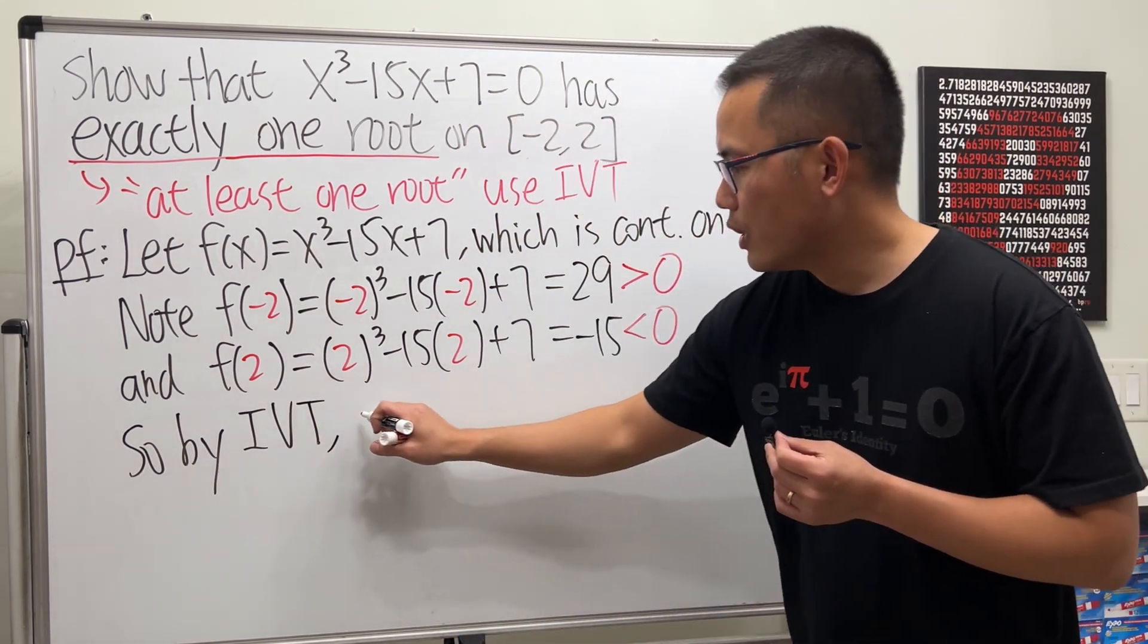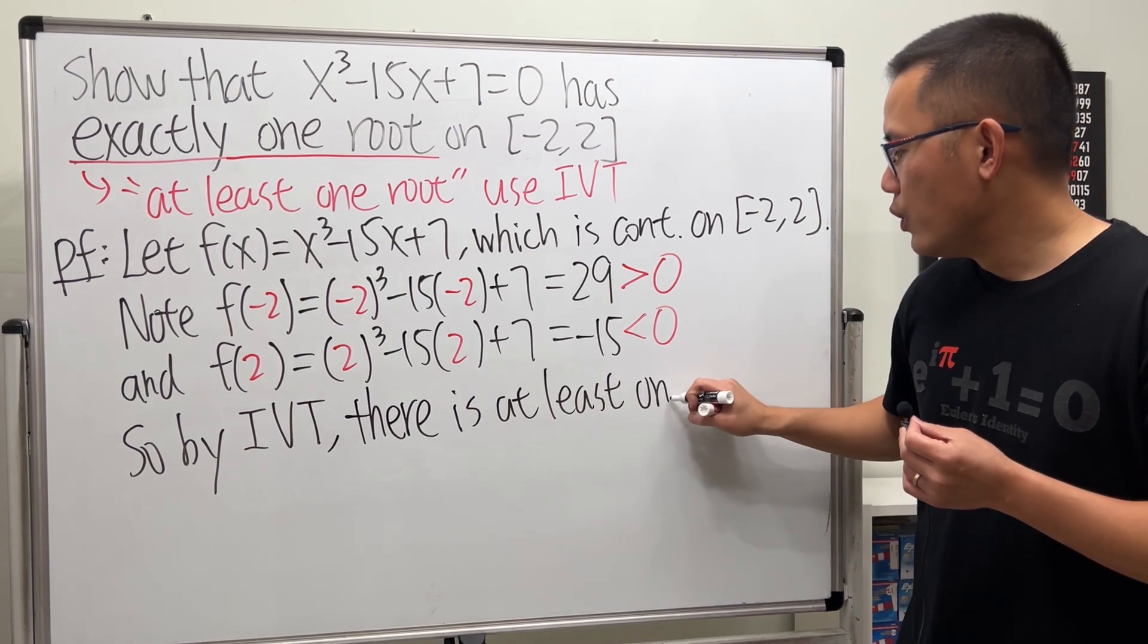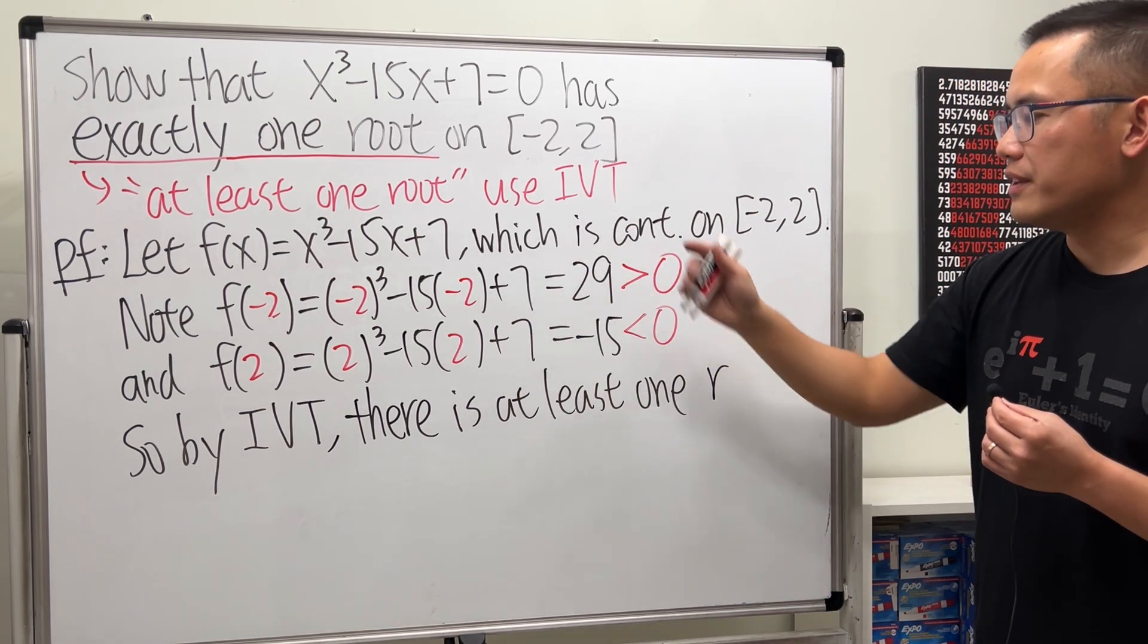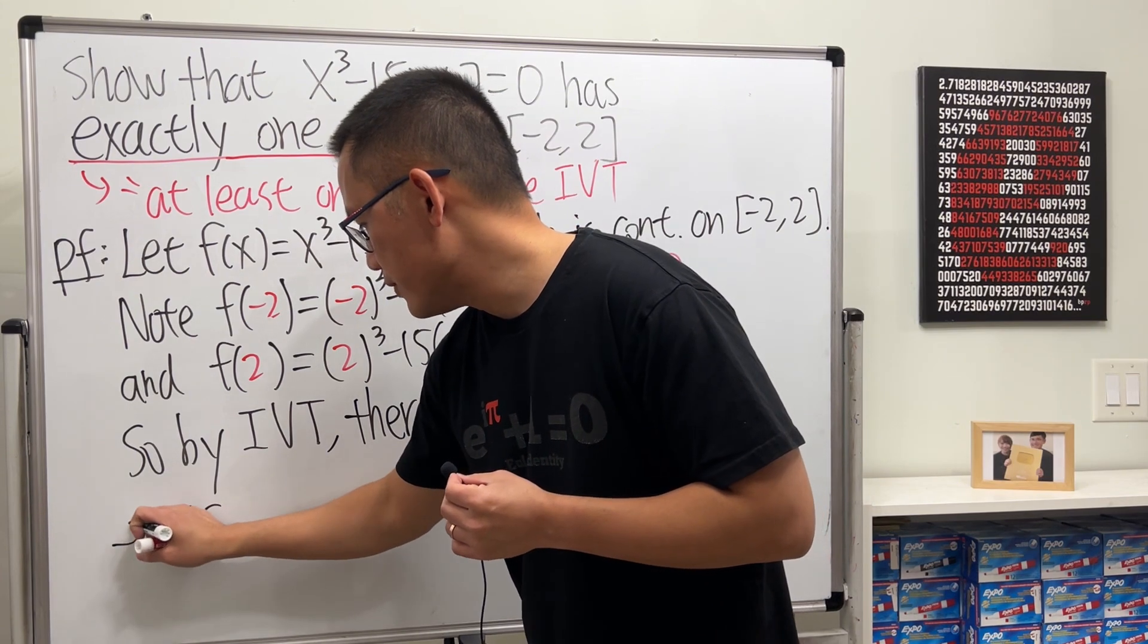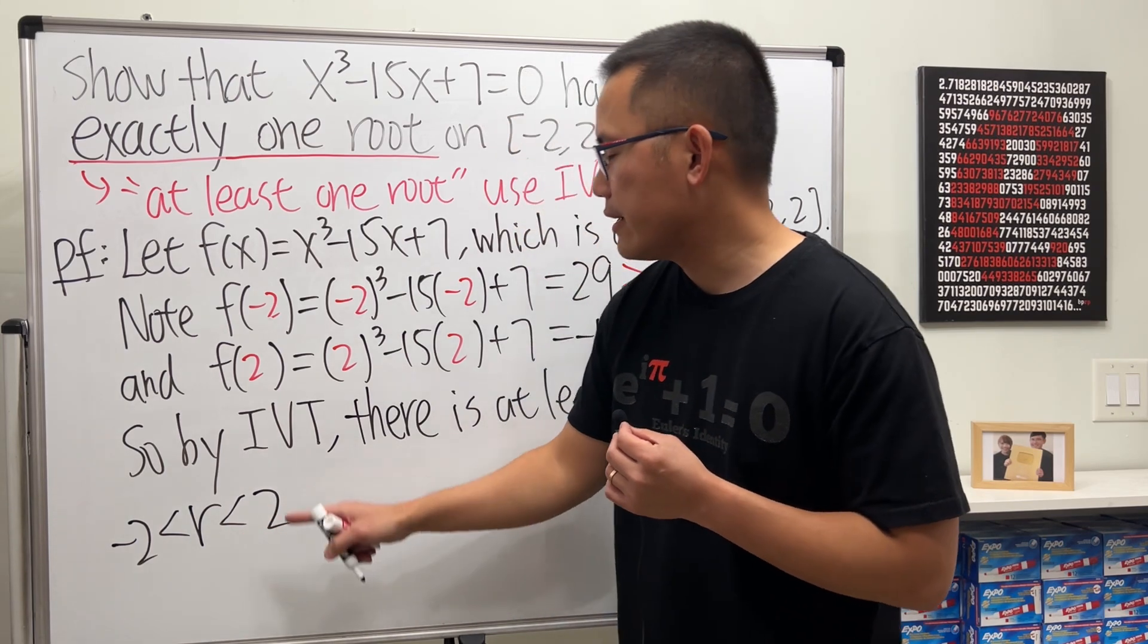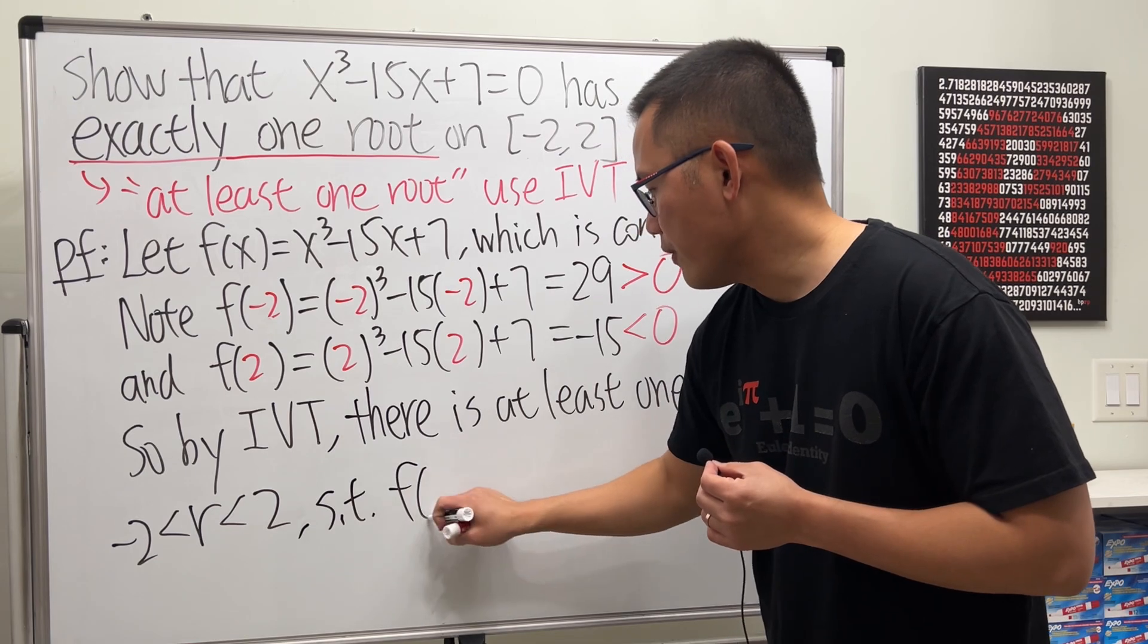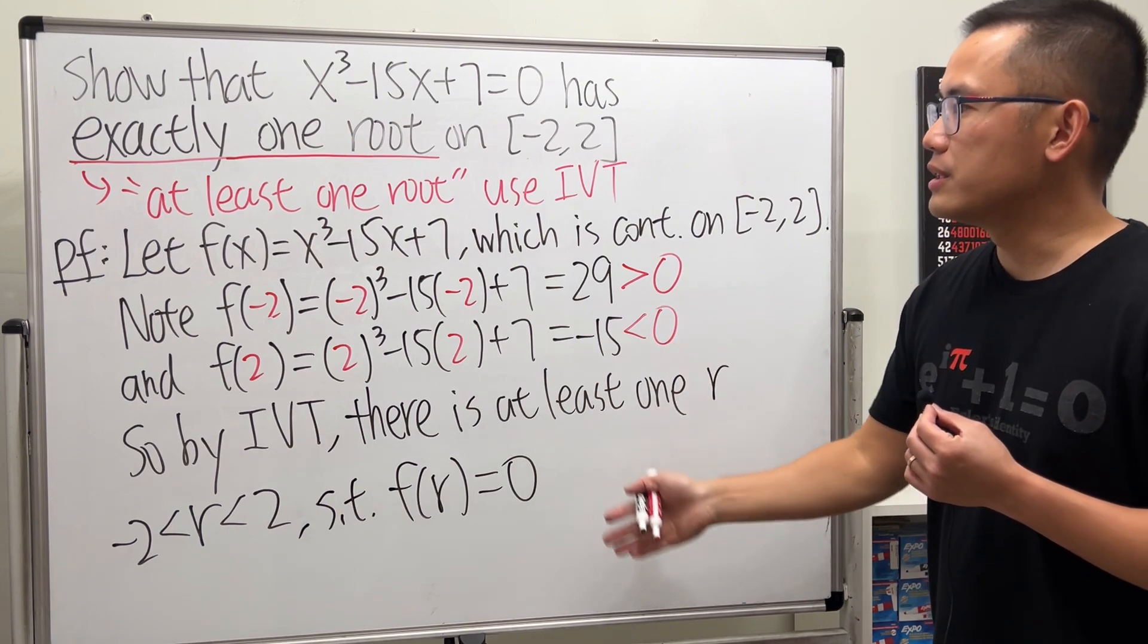Once you have done this, you can just say: so by the Intermediate Value Theorem, we can say that there is at least one root. I'm just going to use r because we're talking about roots—you can also use c, which is the more standard notation when we do the IVT, but doesn't really matter. There is at least one r so that r is in between negative 2 and 2. Notice I do not have to put an equal sign here because I know when we have negative 2 and 2 the results are not equal to zero, so r must be in between, so that f of r is equal to zero. That's just a math way to say that there is a root, technically at least one root.